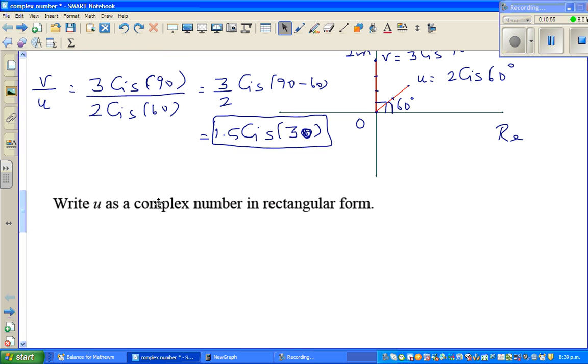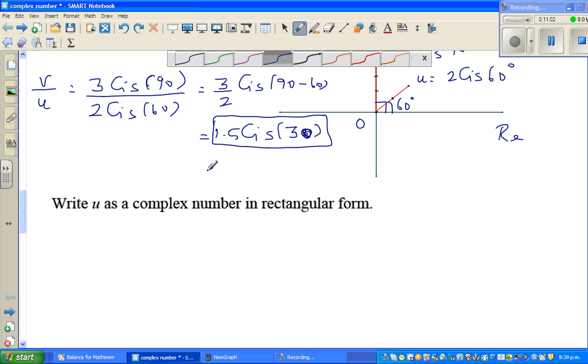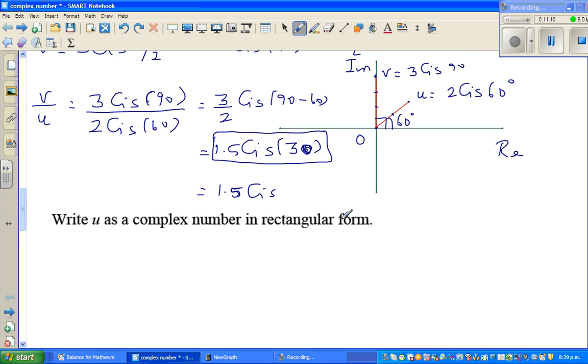So here, write u as a complex number in the rectangular form. What's u? So we want to change this into, finally this is 1.5 cis. Because the question was in radians, so 60, 30 is pi by 6. So this is your answer. 1.5 cis pi by 6. 30 and 180 divided by 6 is 30.